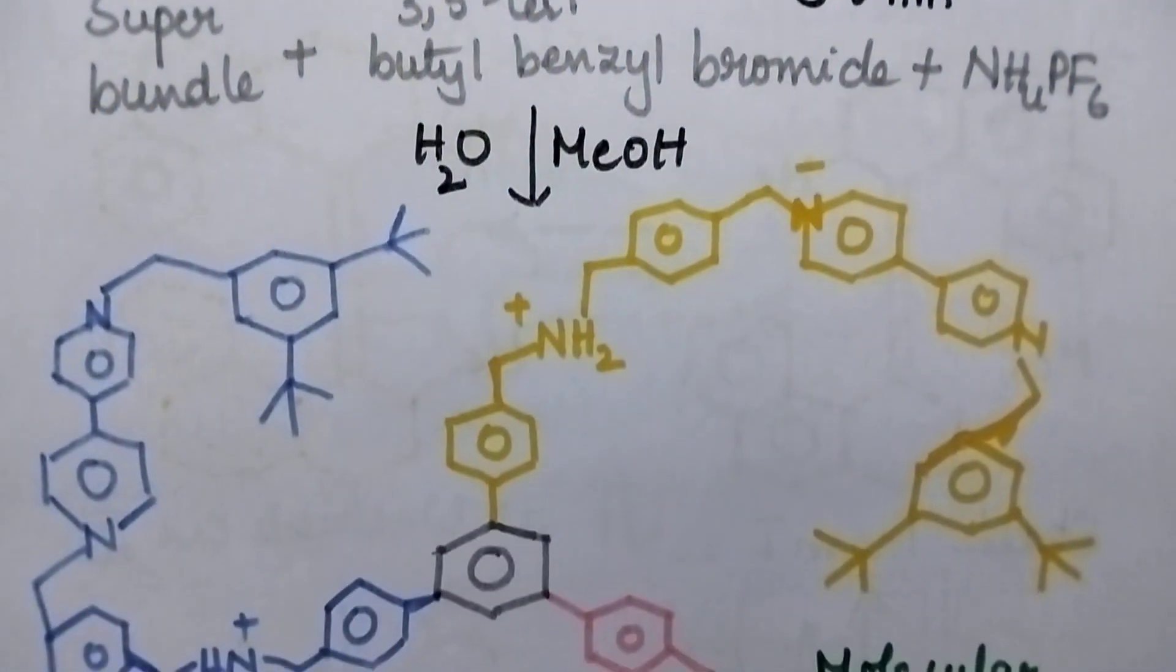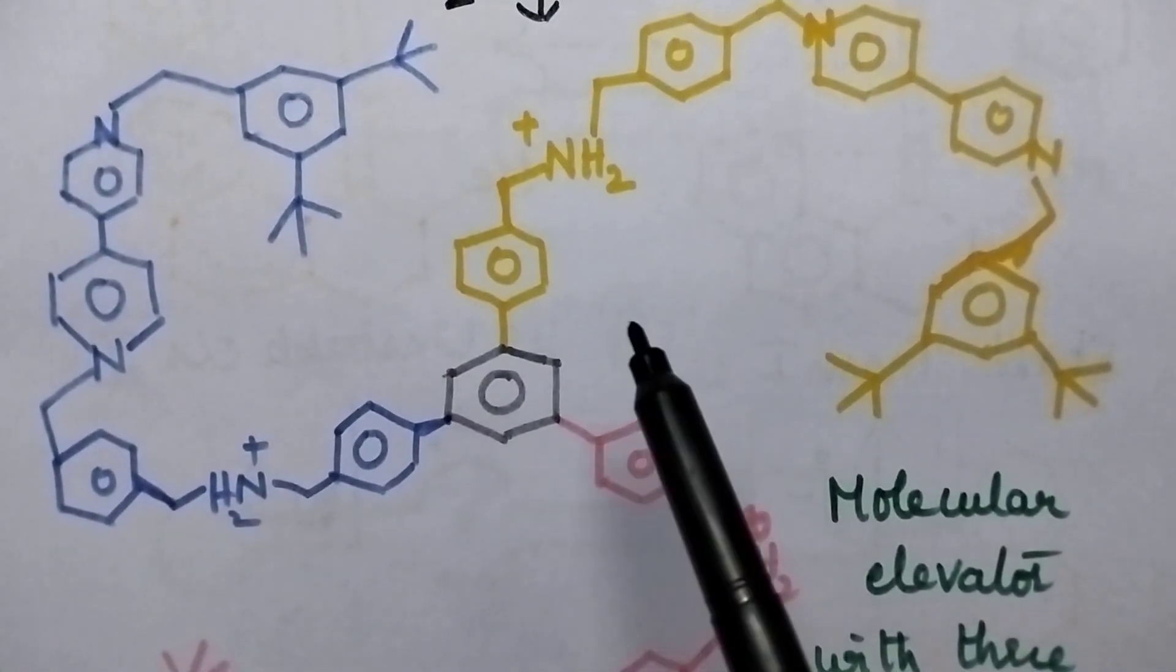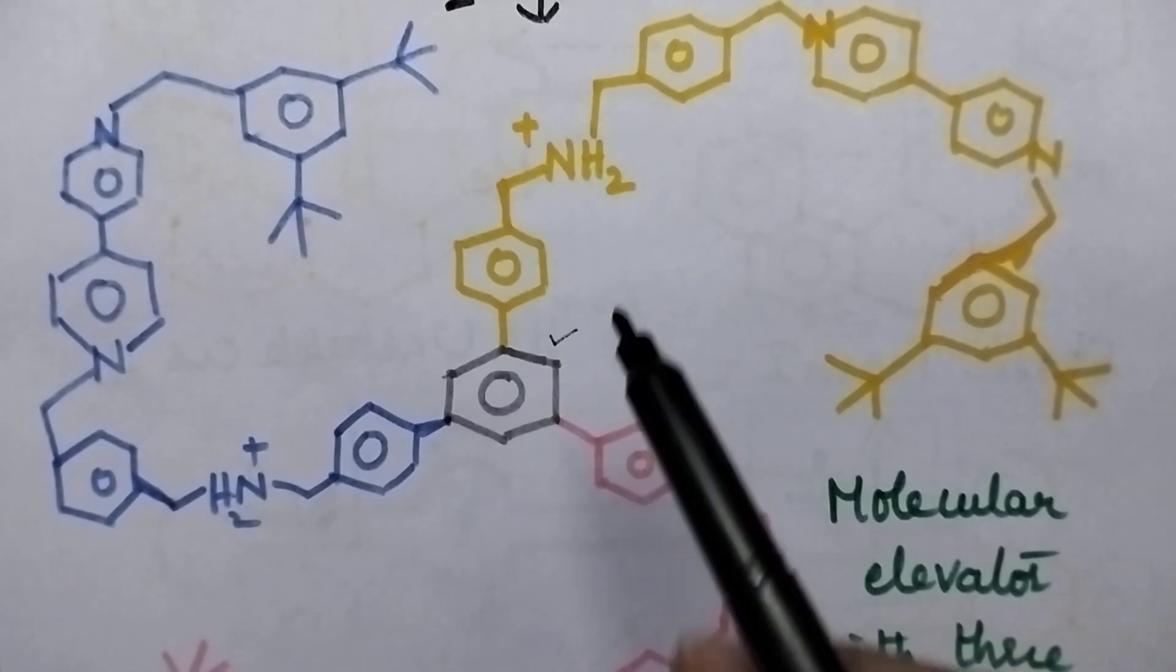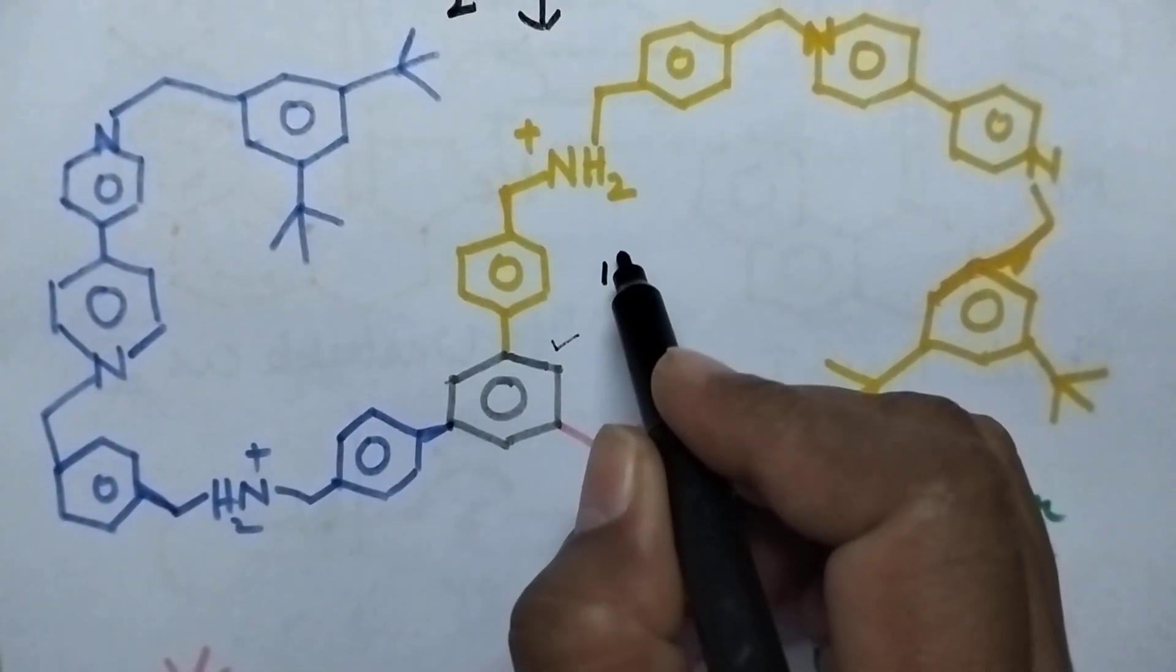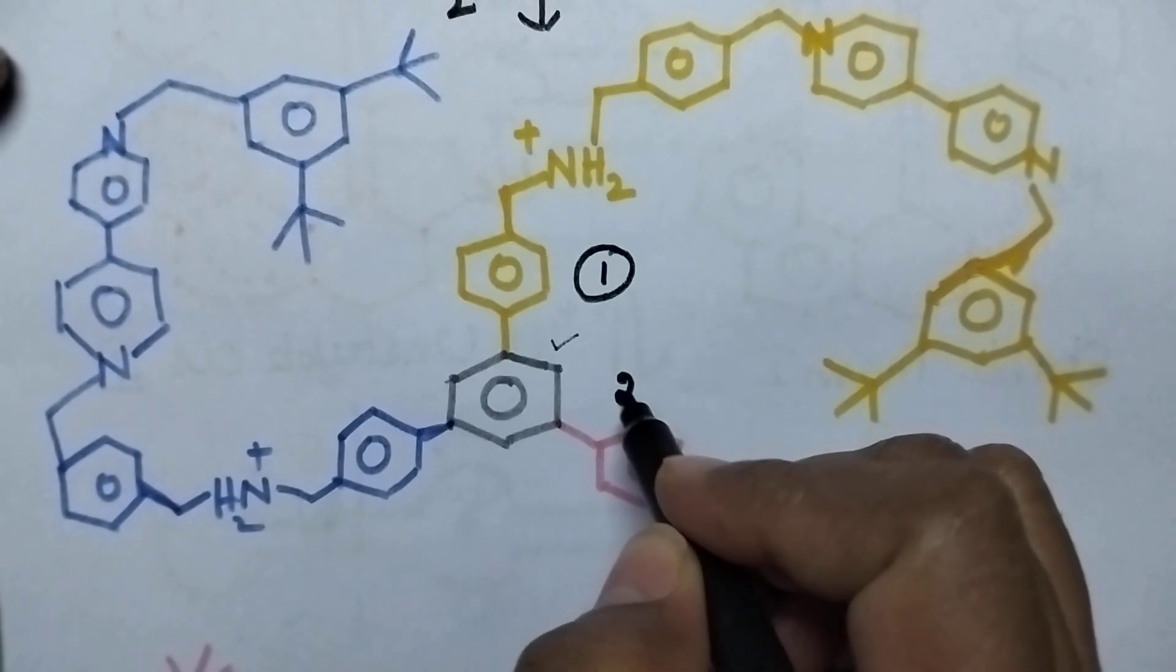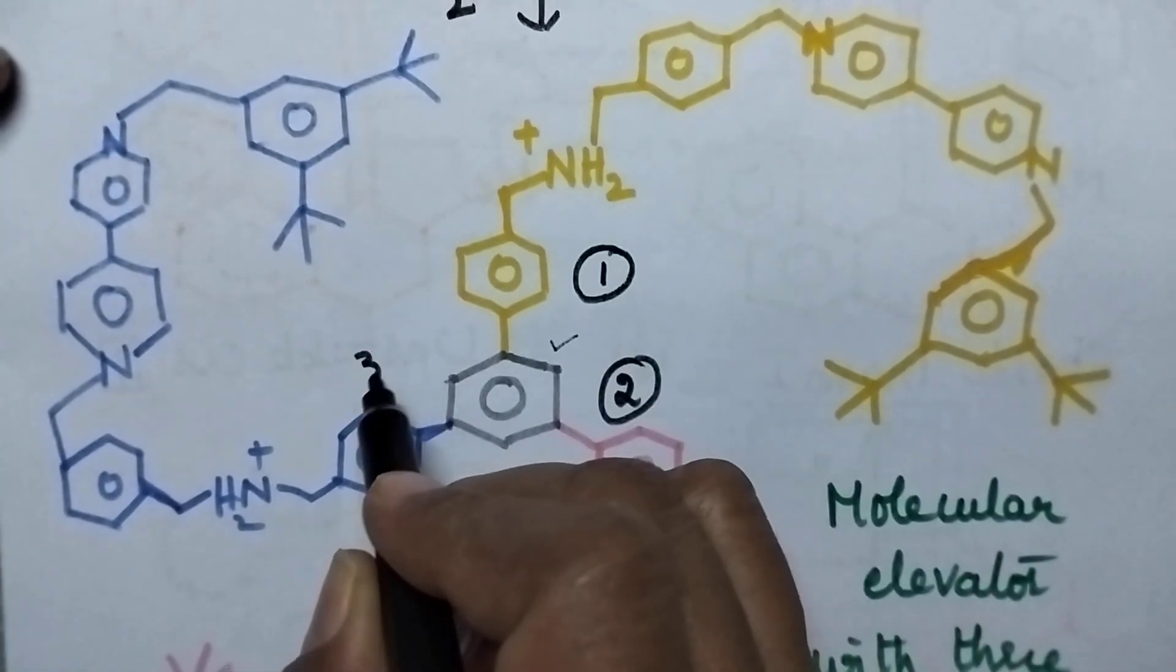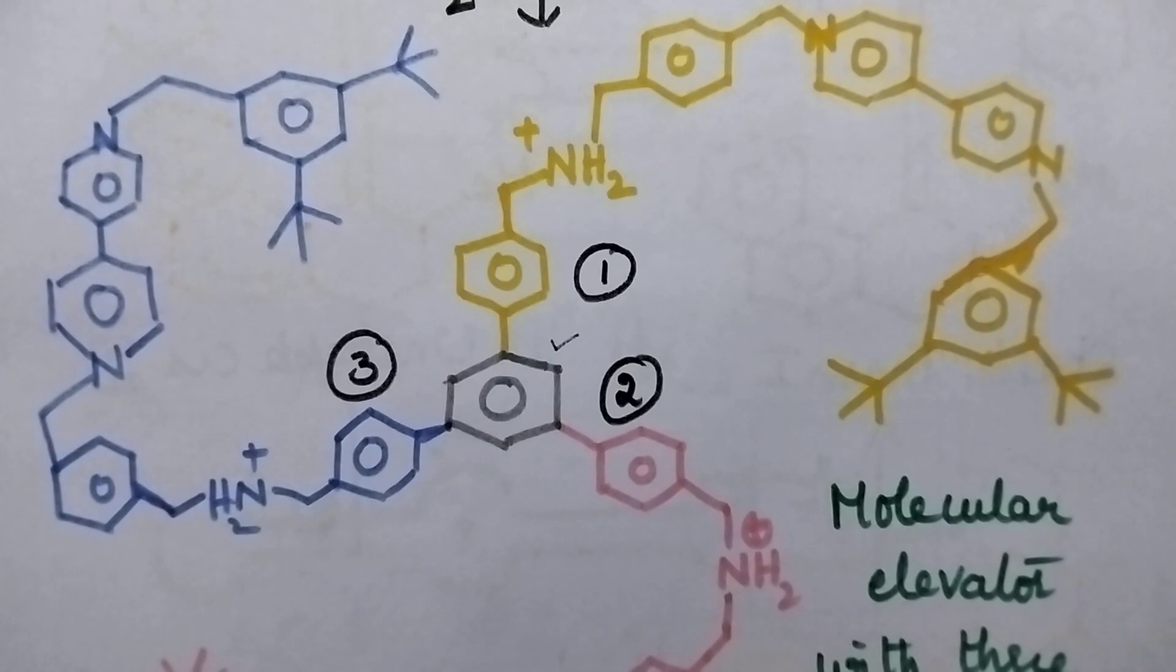Let us see the structure of the molecular elevator. It is the basic benzene molecule and here the three subunits are joined in such a way it results in the formation of a molecular elevator.